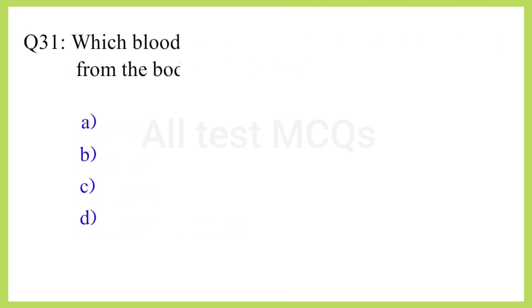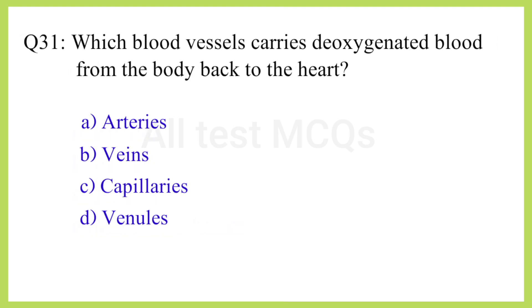Q31. Which blood vessel carries deoxygenated blood from the body back to the heart? The correct answer is option B: Veins.